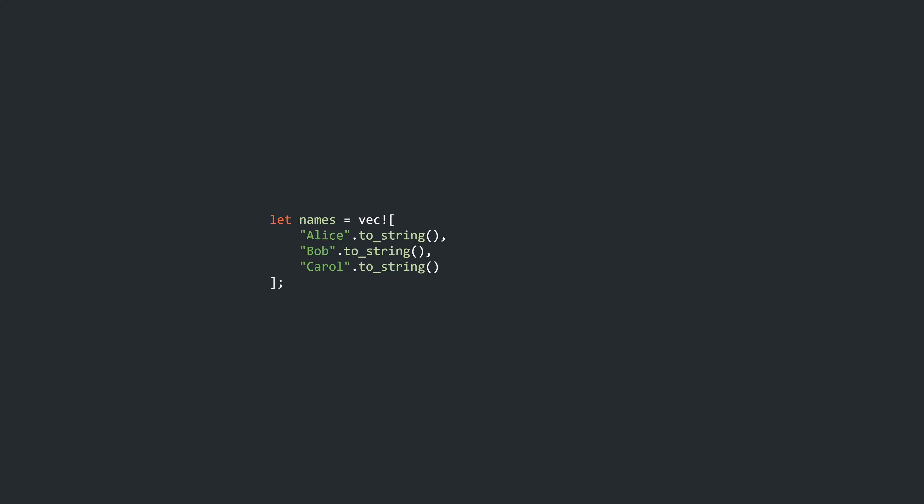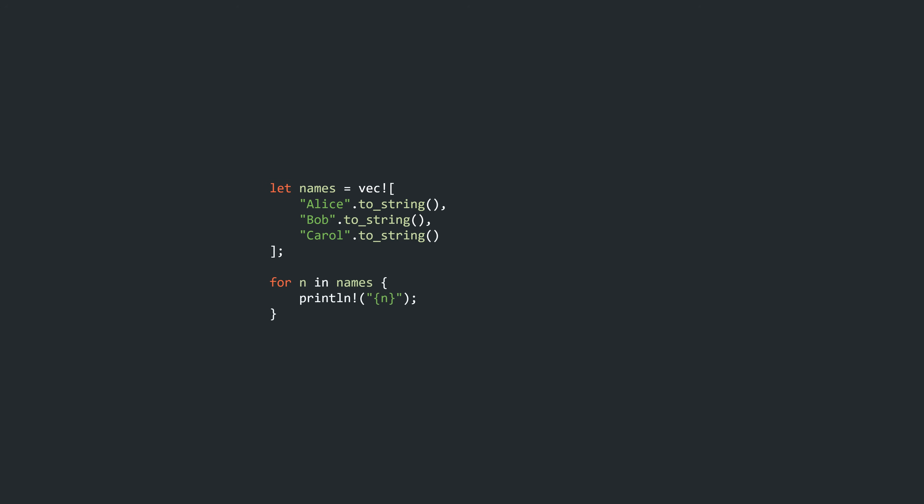You might have written code like this maybe 100 times or more, but did you ever think about how the Rust compiler makes this work? It seems so easy — iterate over a collection by taking ownership of the elements, or via mutable or immutable reference. It's simple, concise, a zero-cost abstraction. We take this beautiful syntax for granted, but how is it that we can dramatically change the semantics of a loop with only a single character?